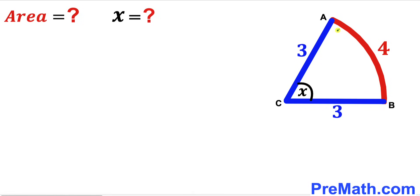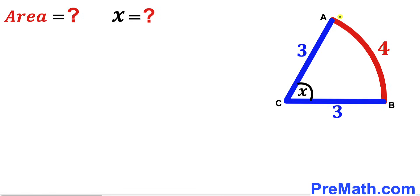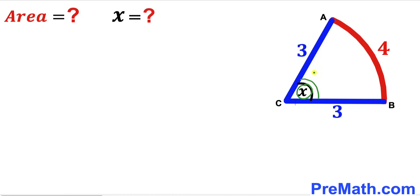Welcome to pre-math. In this video we have got sector ACB with center C, such that radius BC is 3 units and radius AC is 3 units as well. Moreover, arc AB length is 4 units, and angle ACB is represented by x degrees.